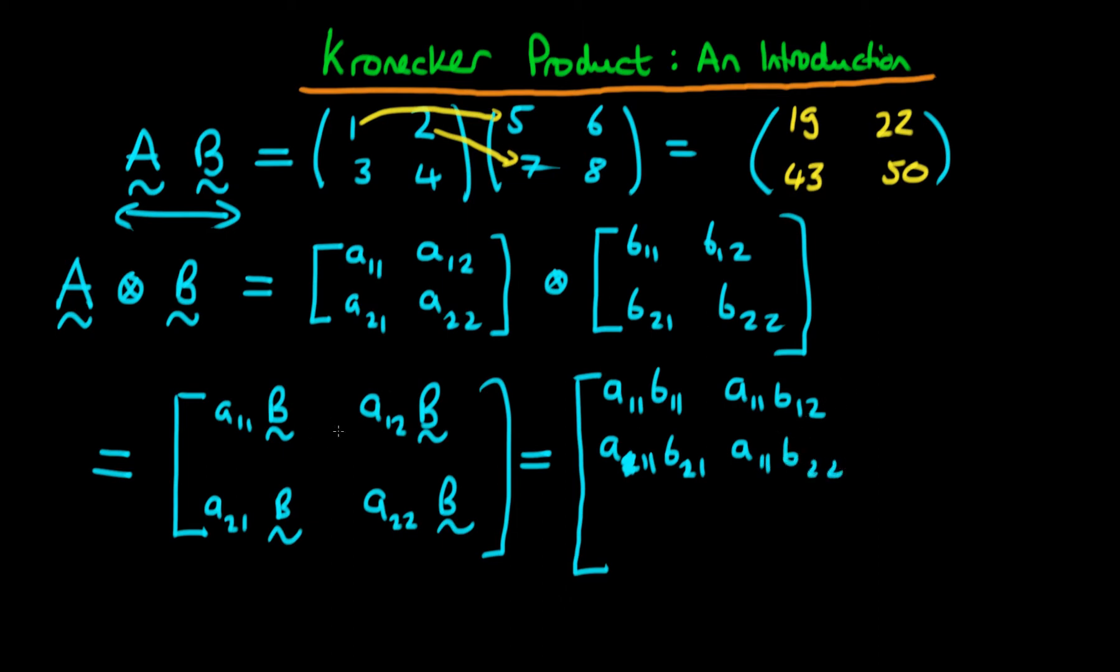Now if we think about this set of four components, we would have A12 times the corresponding elements in B. That would be A12 times B11, A12 times B12, then A12 times B21, and finally A12 times B22.